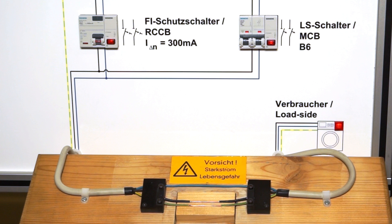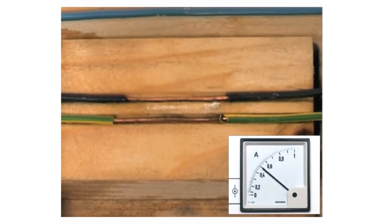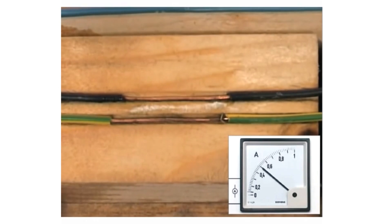The second test clearly shows why residual current operated circuit breakers are so important. A fire can start when the current flowing at the fault location is just 300 milliampere or so.